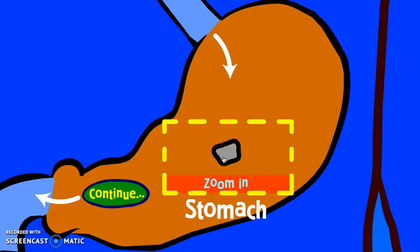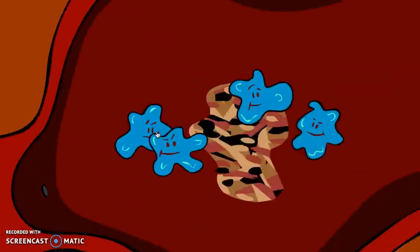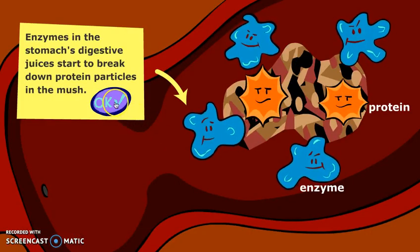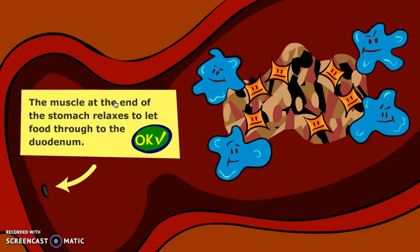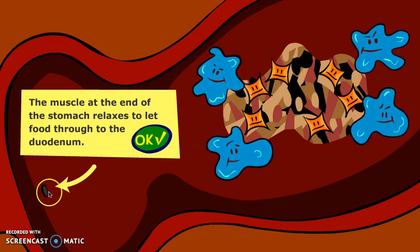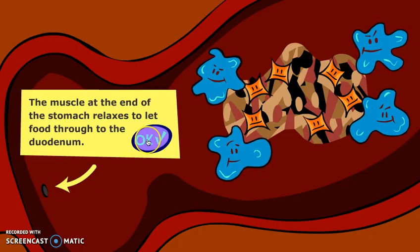Let's have a look at the process of digestion in the stomach. The stomach's gastric juices are mixed with the food, and we have enzymes that work on protein molecules to start breaking them down. The large protein molecules have been broken down into smaller peptide chains. You can also see a small muscular hole at the bottom of the stomach, which needs to relax to allow the contents of the stomach into the duodenum a little at a time to allow for proper digestion.